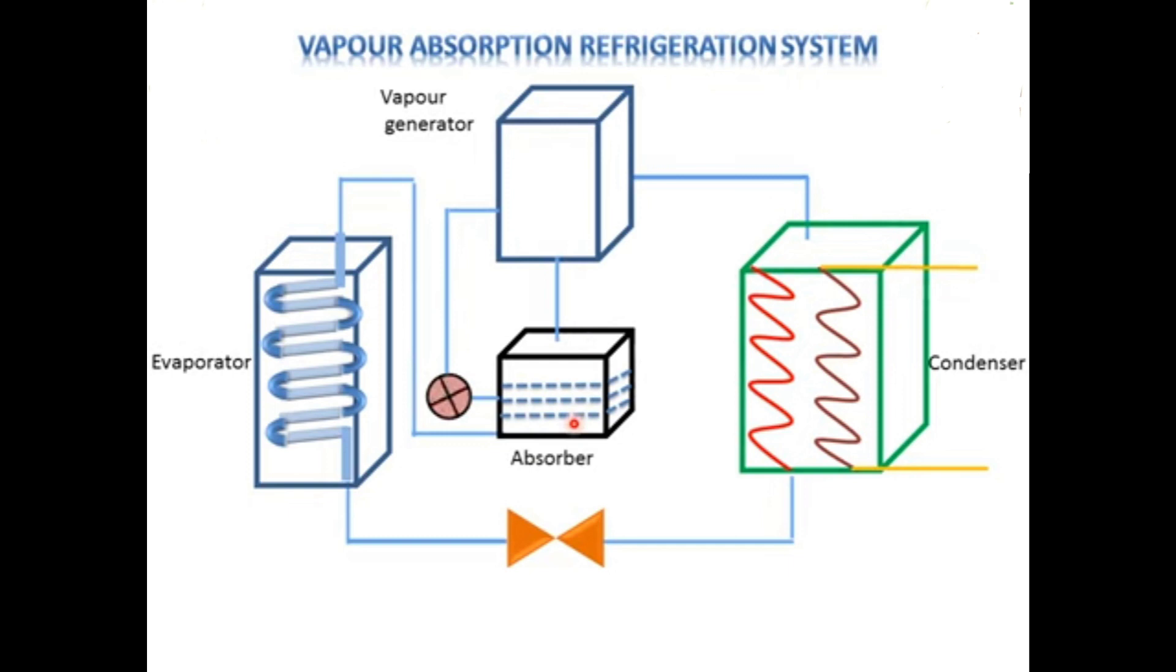In our previous lecture we discussed about Vapour Compression Refrigeration System where we were using compressor for increasing the pressure of refrigerant. Now in Vapour Absorption System, the compressor is replaced by three new devices which are Absorber, Pump and Vapour Generator.